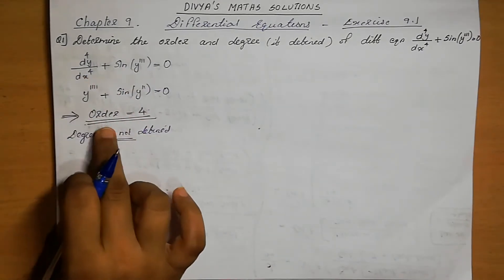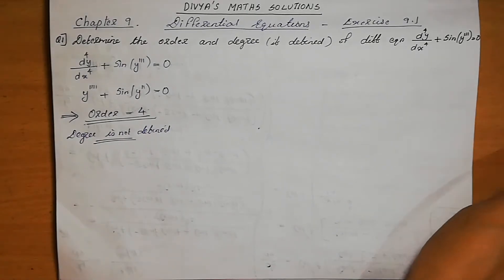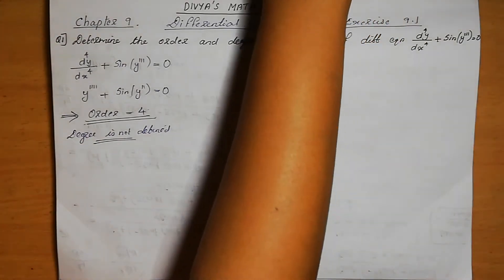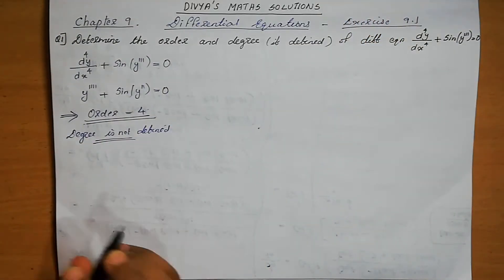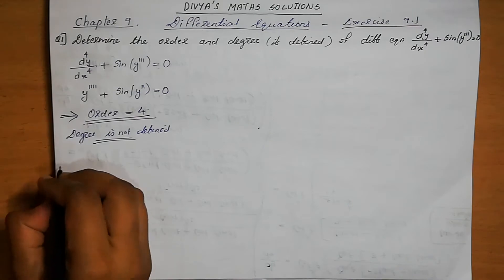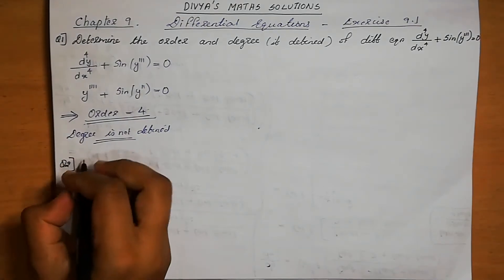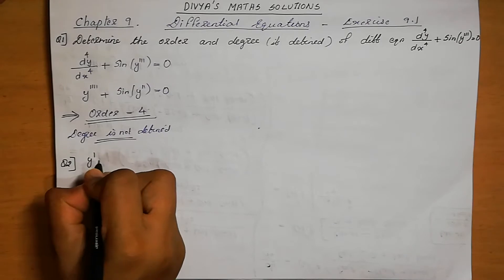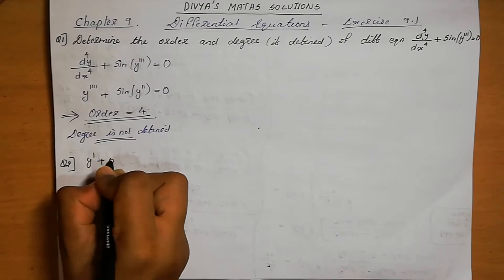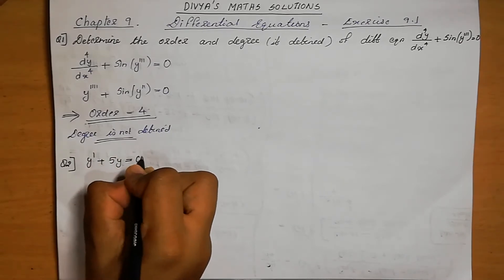The highest order derivative gives the order. Moving to question number 2: y' + 5y = 0. We need to determine the order and degree using the same method.